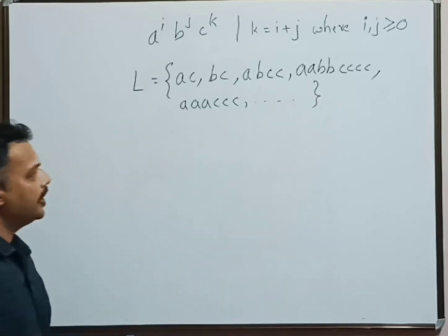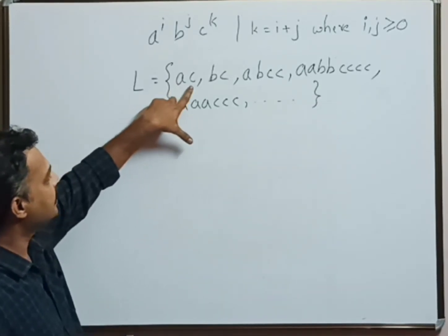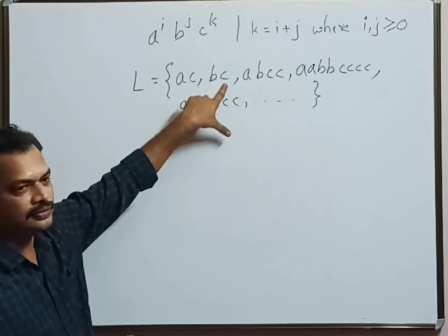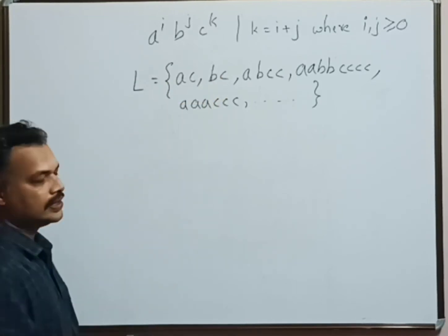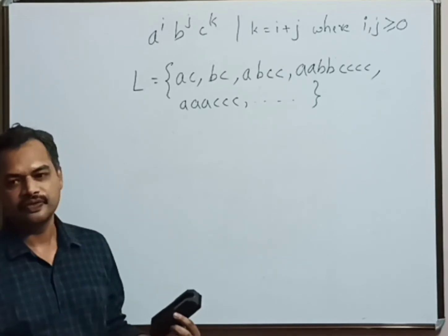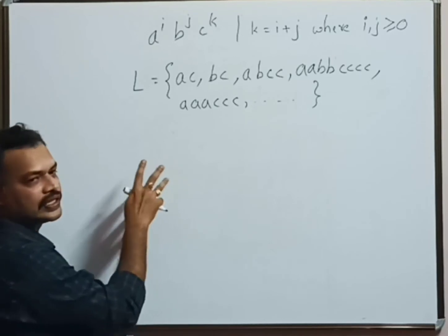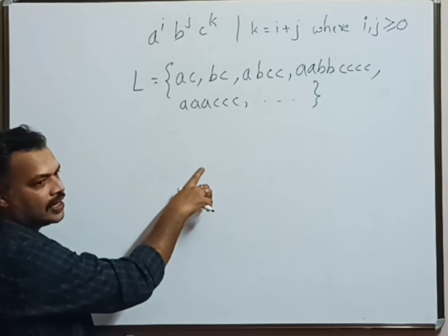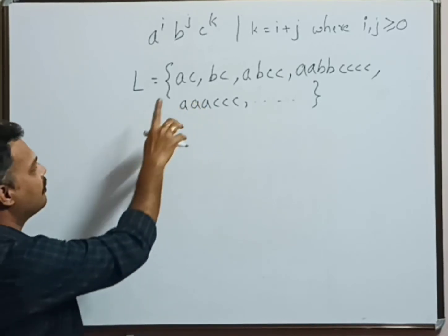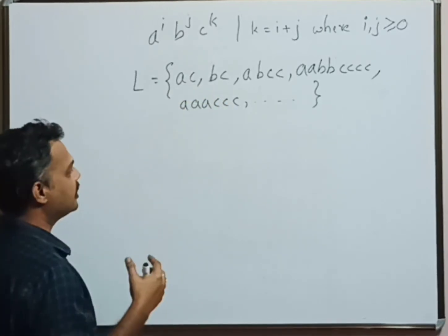Now looking at the language set, it is very clear that for every a there is a c, and for every b there is a c. Let us recall our previous discussion regarding designing CFG. There we came across one solution which says for every a there is a b. Now the difference is, for every a there is a c, for every b there is a c. Based on this constraint we can design the CFG.